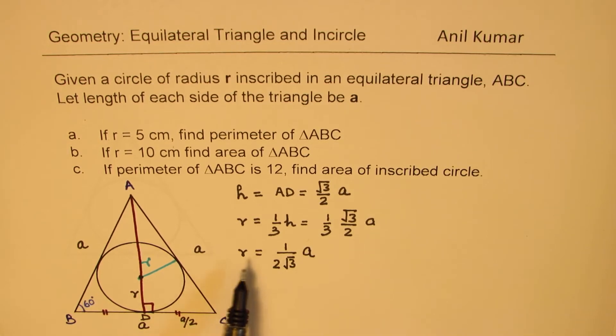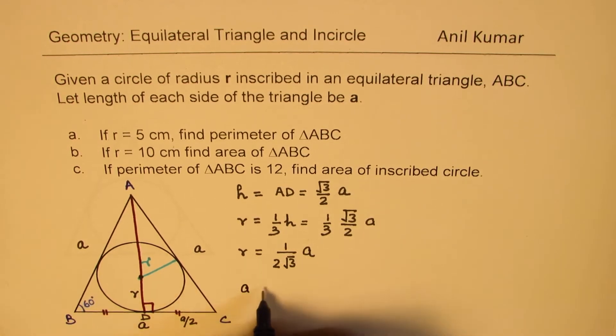We know the radius in terms of a. This can be written the other way: a = 2√3·r. This gives us another useful formula.